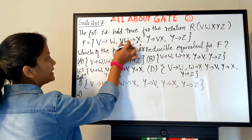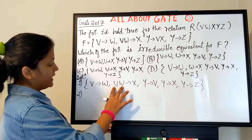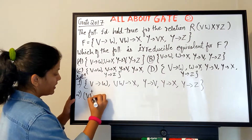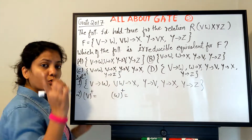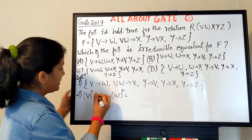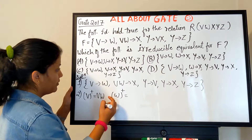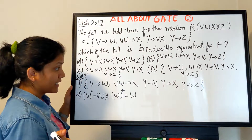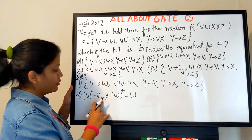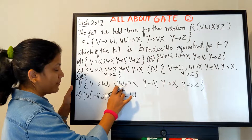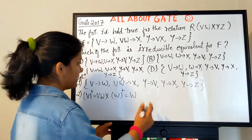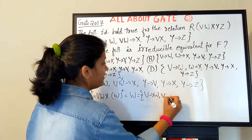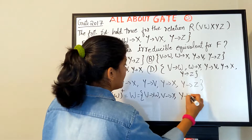Step two: check for redundancy in the LHS of any FD. Here VW→X has two attributes on the LHS. Compute V⁺: gives V, then W, then X. Compute W⁺: gives only W. Since V already determines W, W is redundant in VW→X. So VW→X reduces to V→X. The rest remain as is: V→W, V→X, Y→V, Y→X, Y→Z.